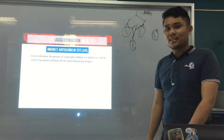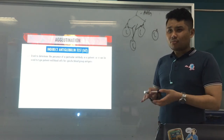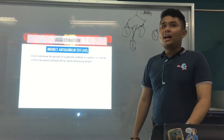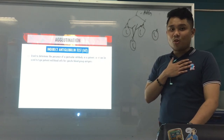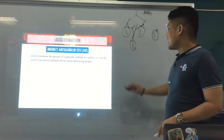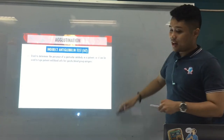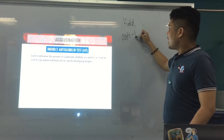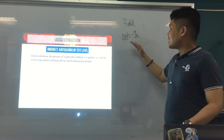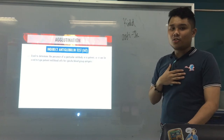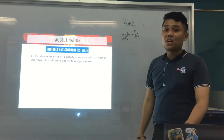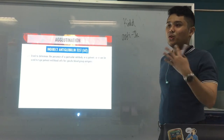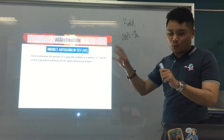The next type is the indirect — opposite of direct: in vitro, outside of the body. We sensitize the RBCs with the antibody we want to detect. We usually use it to determine a specific antibody present in the patient, for example antibodies to other blood group antigens like Kidd (JK). If you want to detect if this antibody is found in the patient, you perform the IAT or indirect antiglobulin test.